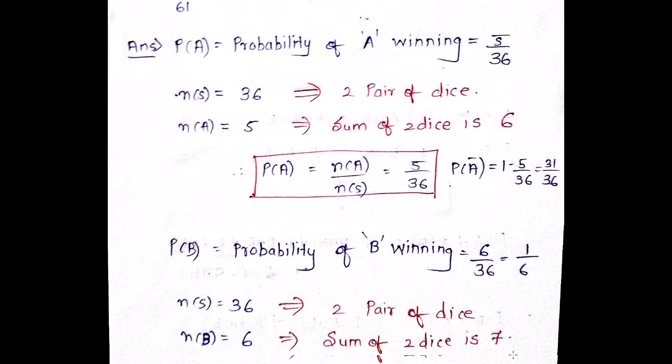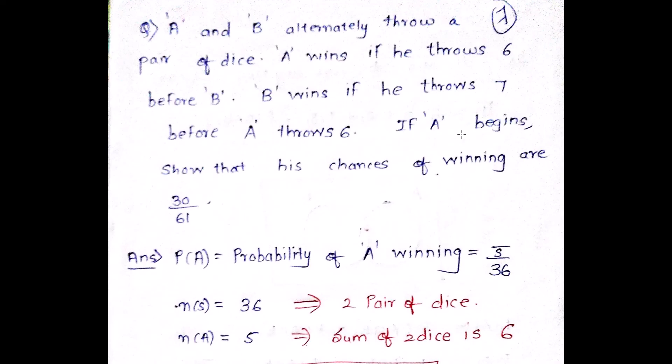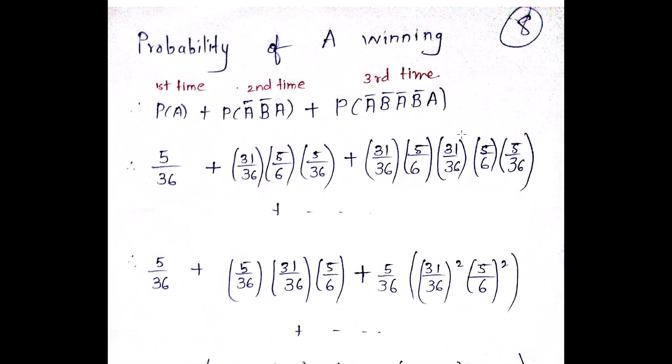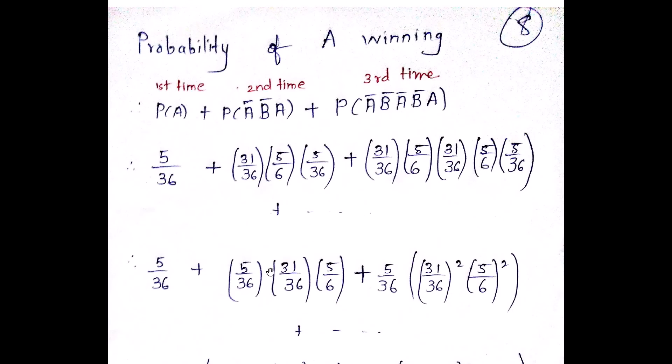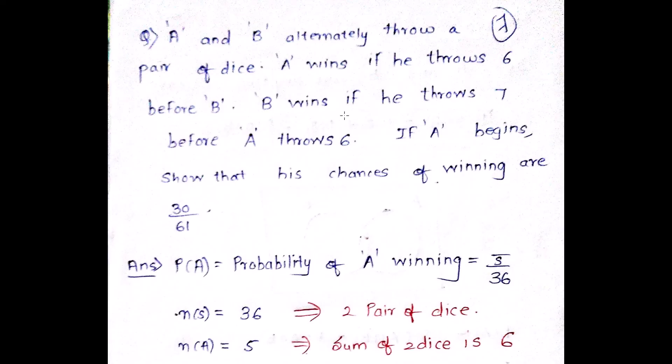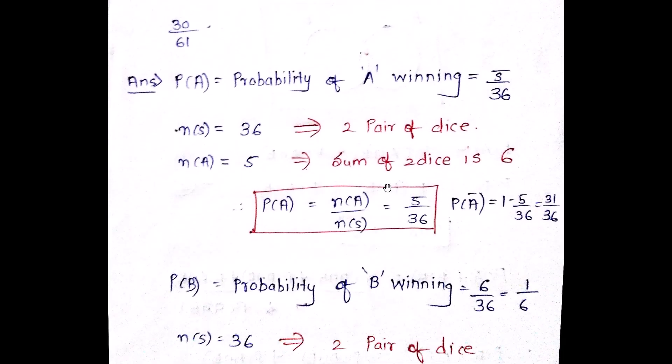Hence, if I know the individual probability of winning of A and B, the question says, if A starts throwing the die first, what is the probability that A will win? So imagine, in the first time, A throws the die. So what is the probability of A winning? It is 5 by 36. So that is what I have written. But imagine, if A throws the die and it is not able to get 6 in the first attempt, which is the winning one.